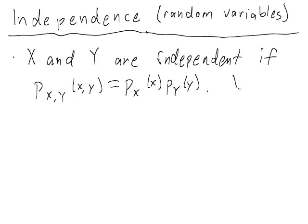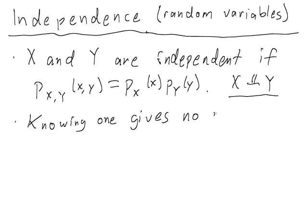And our notation for this is x independent y. Now, what does independence mean? Intuitively, it means that knowing one gives you no information about the other.